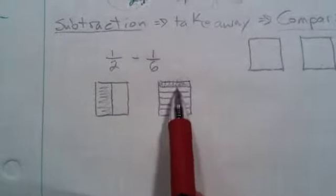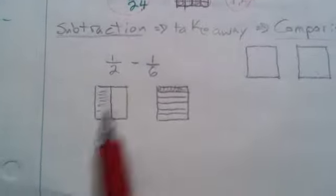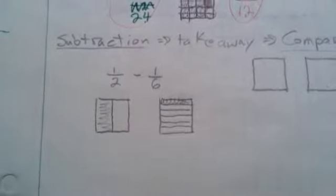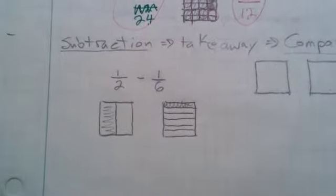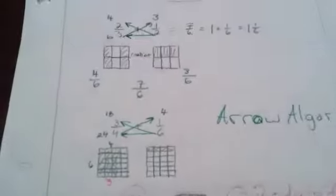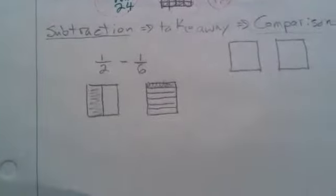So again, I can't directly take a sixth away from a half because I don't see that shape in there explicitly. So one option is to go with what we did with the addition, is cut each cake like the other.